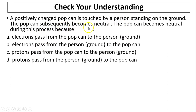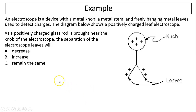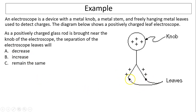Check your understanding: a positively charged pop can is touched by a person standing on the ground, and the pop can becomes neutral. This happens because electrons pass from the person to the pop can — that's the correct choice, because the pop can was positively charged and needs to be neutralized. Another example: the electroscope is positively charged, and a positively charged glass rod is brought near the knob. The positive rod attracts electrons upward, so the bottom leaves become more positive, and the separation of the leaves increases — they separate more.